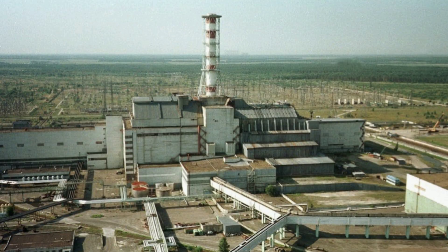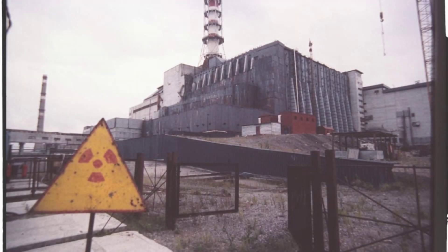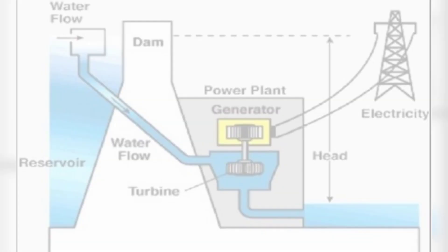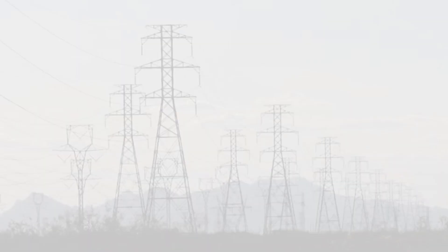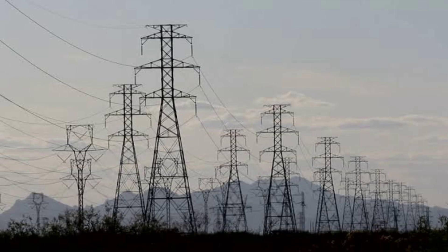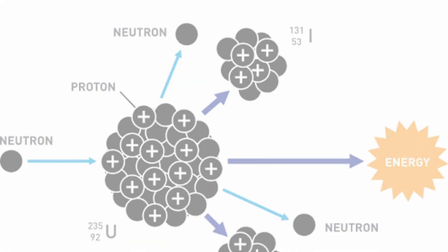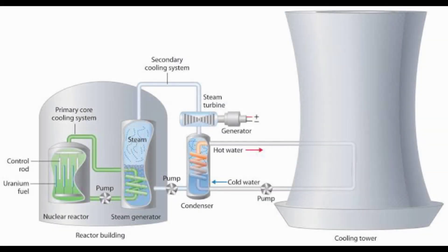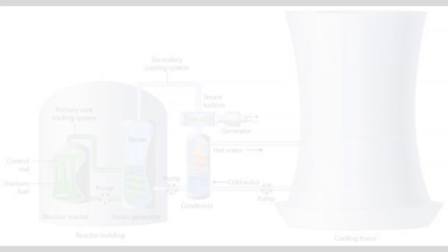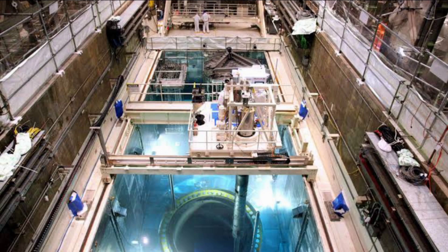What kind of power plant is a nuclear power plant? For example, in electricity generation using a hydroelectric power plant, the pressure of the dam generates power. In a nuclear reactor, the isotope uranium-235 is used to generate heat through nuclear fission.